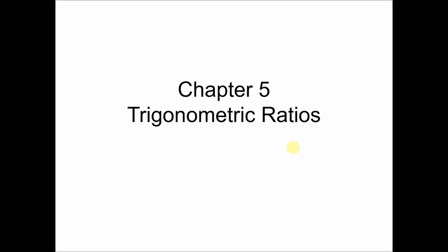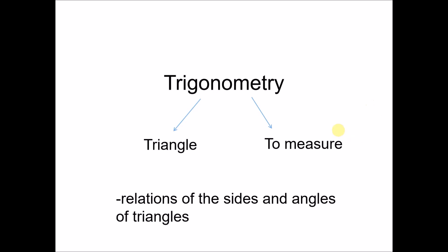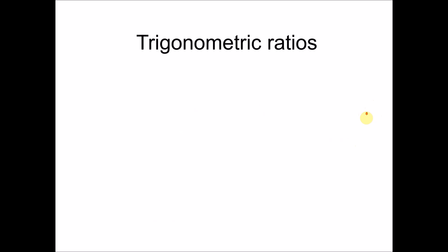Welcome to Form 3 Mathematics Chapter 5: Trigonometric Ratios. Trigonometry comes from the Greek, where 'trigon' means triangle and 'metric' means to measure. So trigonometry is the study of the relations of the sides and angles of triangles.